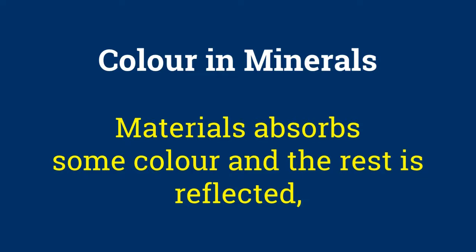White light is supposed to be a spectrum of colors. When this light falls on, suppose any blue material, the mineral absorbs yellow, red, green and any other color of the spectrum which is not blue. Hence, only blue light remains which is then reflected and that is what we see.